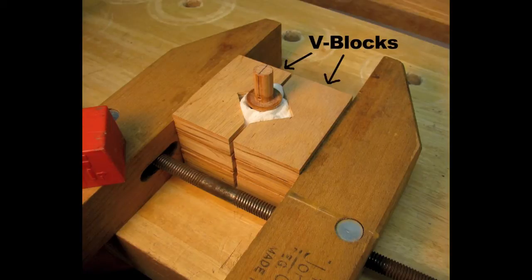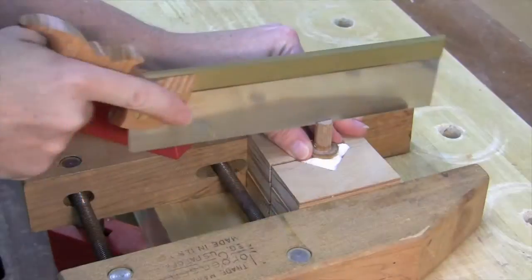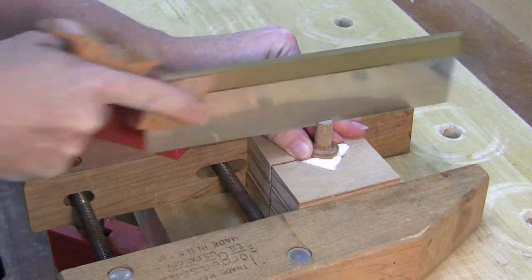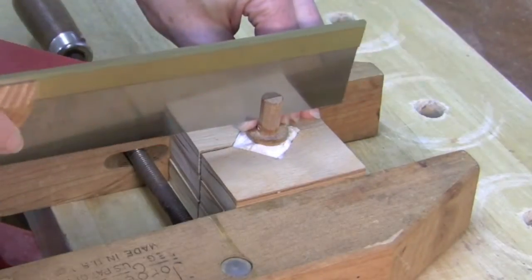I wrapped the drawer pull with a paper towel to prevent marring, slipped it between V-blocks, and clamped it with a handscrew. Then I sawed the kerf across rather than with the grain.